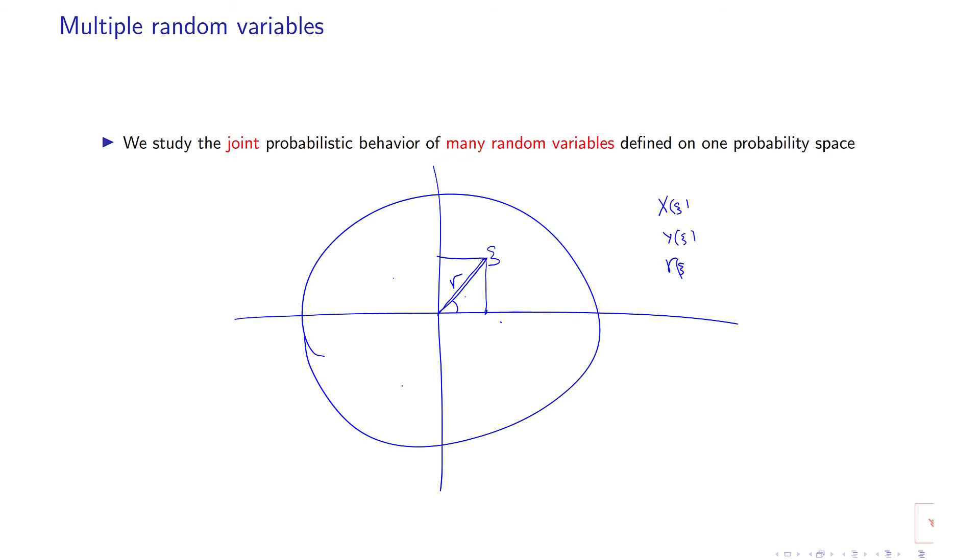or you could have this angle θ(ξ). So you could define different random variables associated with a particle hitting a random point inside this circle.